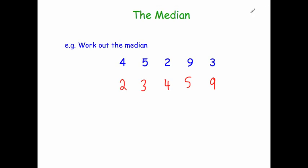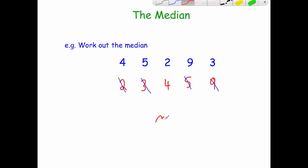We've arranged all the numbers from smallest to largest. Let's check we've got all of them — we started with 5 numbers and we've still got 5. Now we just cross them off until we find the middle one: 2, then 9, then 3, then 5. So the middle number is 4, which means the median is 4.